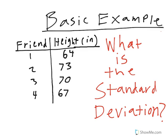If you take a measurement of four friends, the four friends have the heights of 64 inches, 73 inches, 70 inches, and 67 inches. So we want to find the standard deviation.